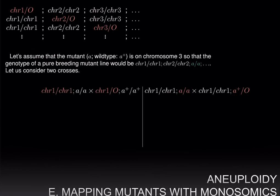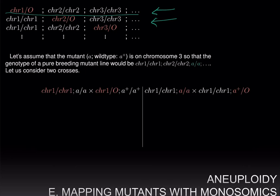One important use of aneuploidy and monosomics in plant genetics is to map mutants to chromosomes. What one does is create monosomic lines — for example, the first line is monosomic for chromosome 1, so it has two copies of every other chromosome but only one copy of chromosome 1. The second line is monosomic for chromosome 2, the third for chromosome 3, and so on. Let's say we've discovered a mutant and we want to determine which chromosome it is on. To illustrate the process, let's assume this mutant is on chromosome 3; we'll denote the wild-type allele as A+ and the mutant allele as a.